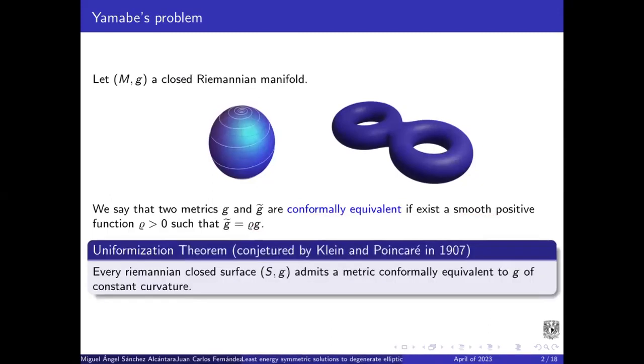We have the uniformization theorem computed by Klein and Poincaré in 1882. Every Riemannian closed surface admits a metric conformal equivalent to g of constant curvature.